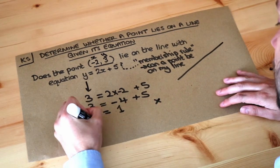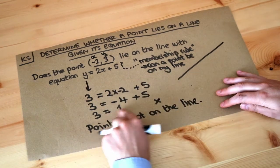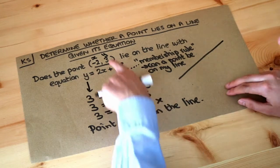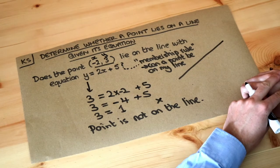So the point is not on the line. Whereas if these were equal, then this point would satisfy this equation and therefore that point would be on the line.